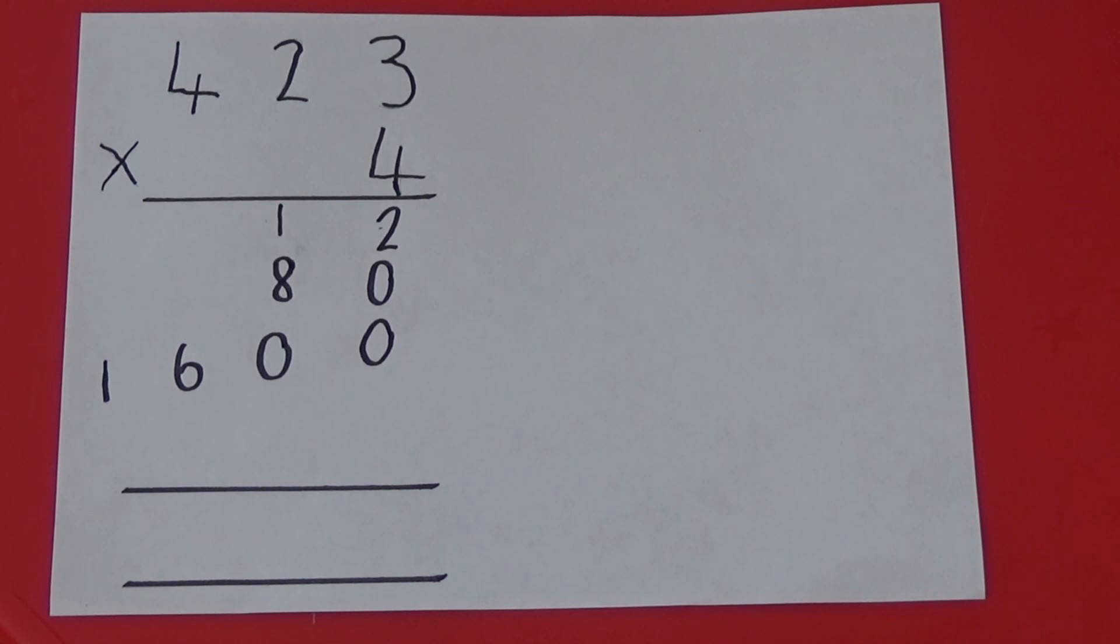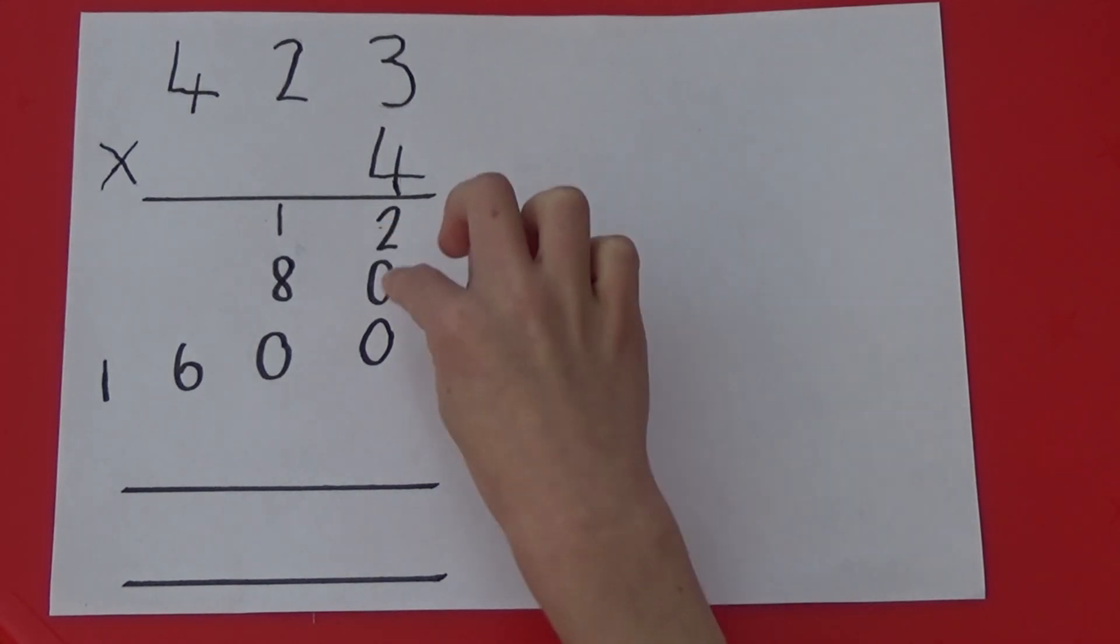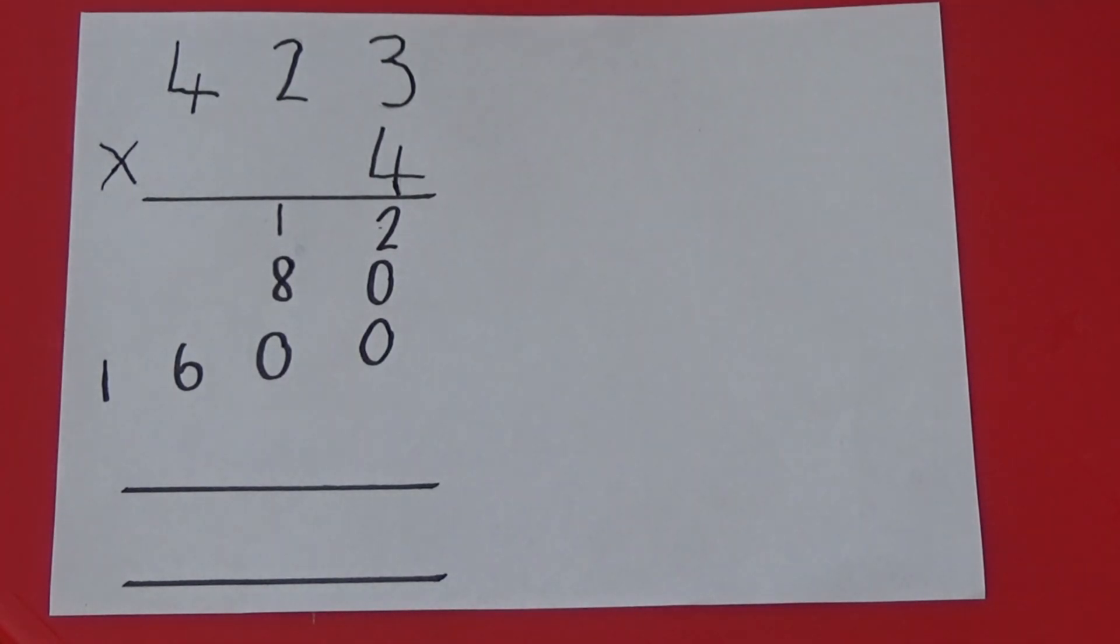Once we have written down each digit multiplied by 4, we need to add them all together. Here, we can see that 2, add 0, add 0, equals 2.